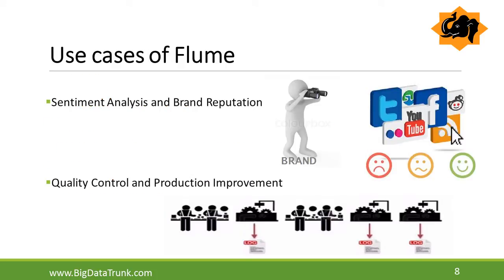Some use cases of Apache Flume include sentiment analysis and brand reputation. Financial service firms deploy Flume agents in various applications such as call centers, CRM, web applications, and mobile apps to pull data from all channels into HDFS and analyze these data streams to deliver insights. Another use case is quality control and production improvement — in factories, machines produce log files, and manufacturers deploy Flume agents to collect these log files from production machines, store them in HDFS, and analyze them to pinpoint potential problems and improve quality control.